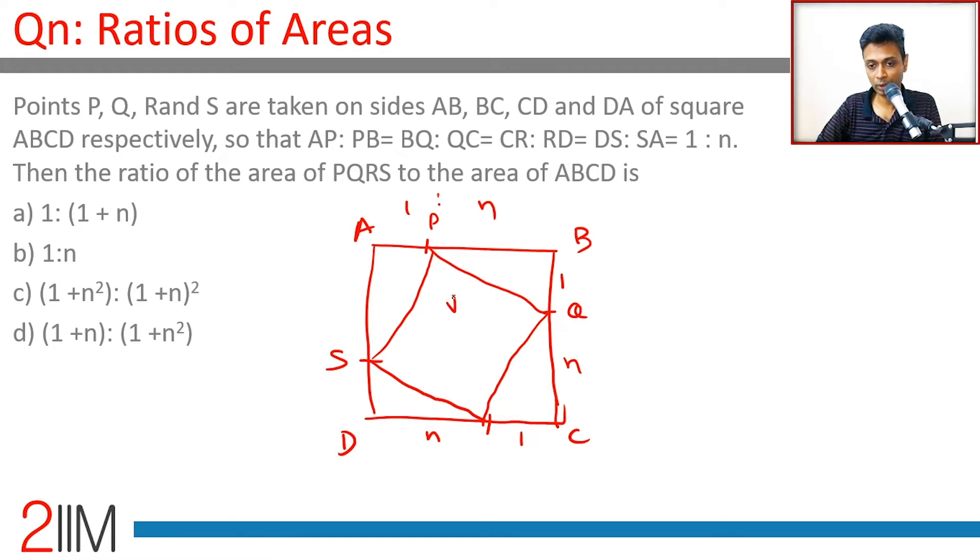So PQ would be square root of n square plus one. Pythagorean theorem, nothing more than that. Area of ABCD is n plus one whole square. Area of PQRS.